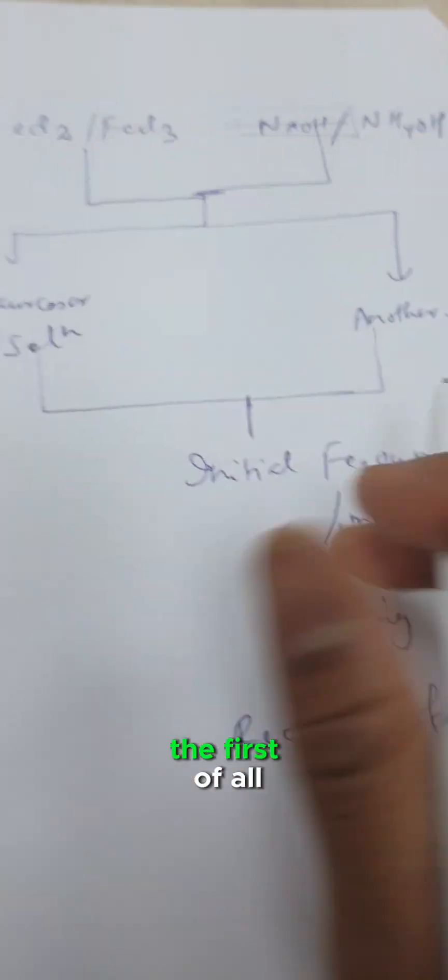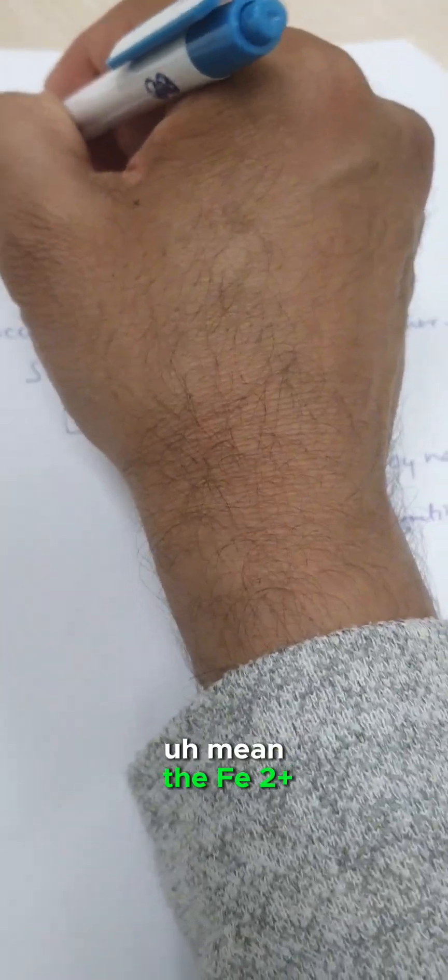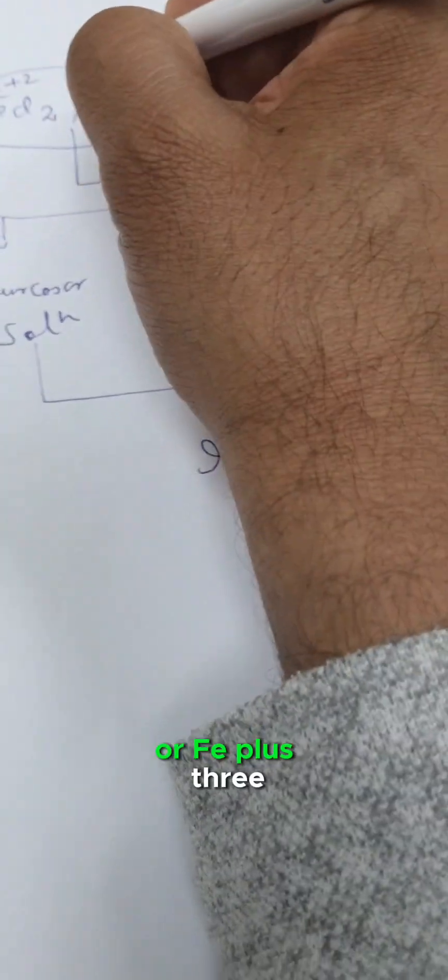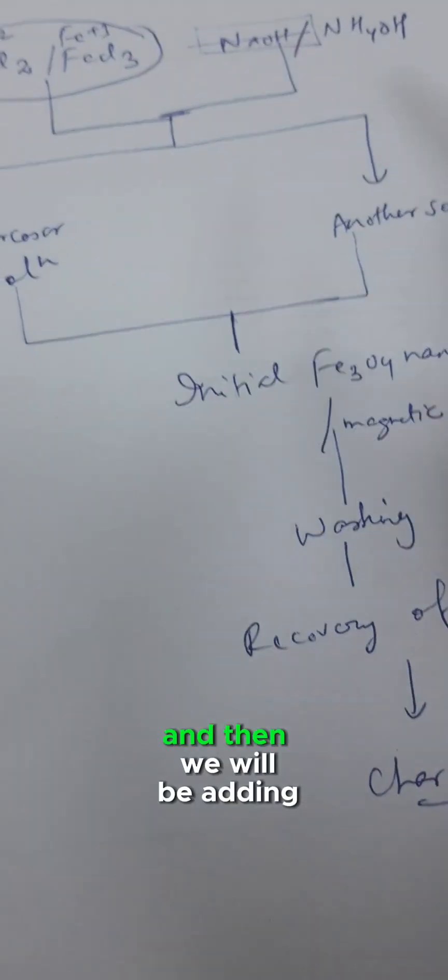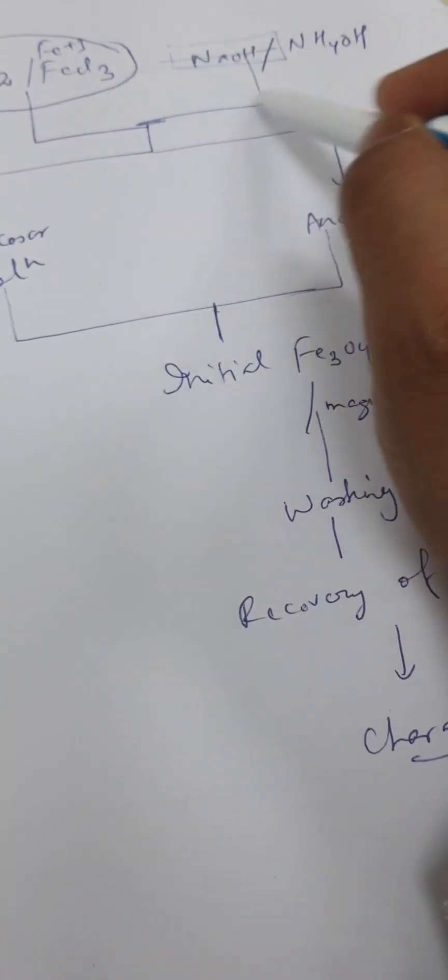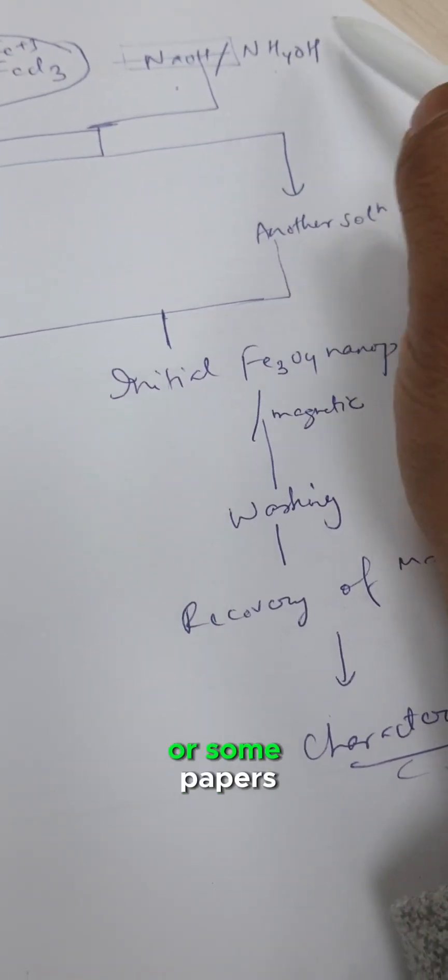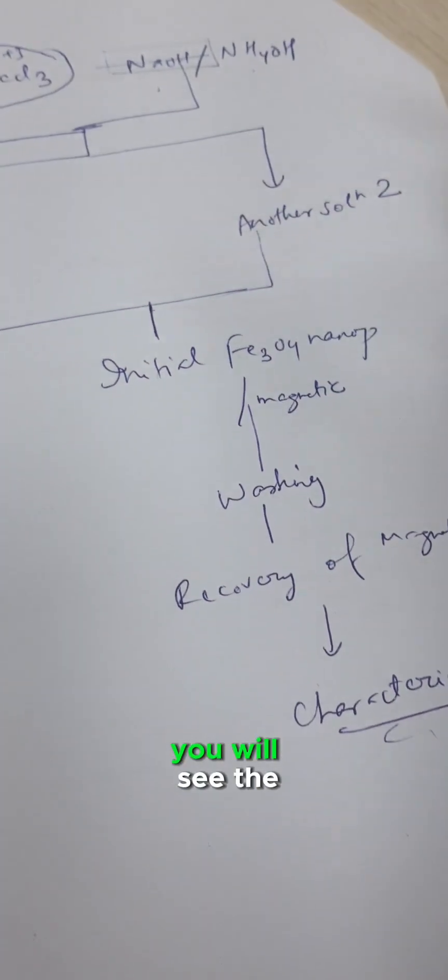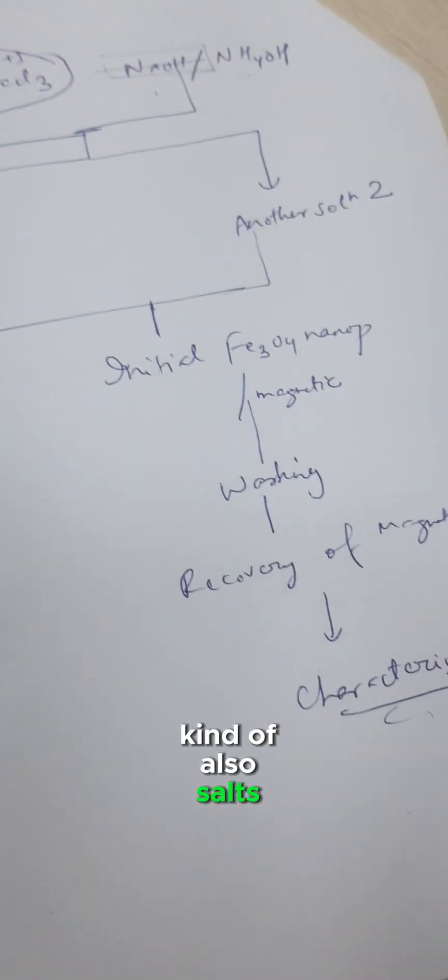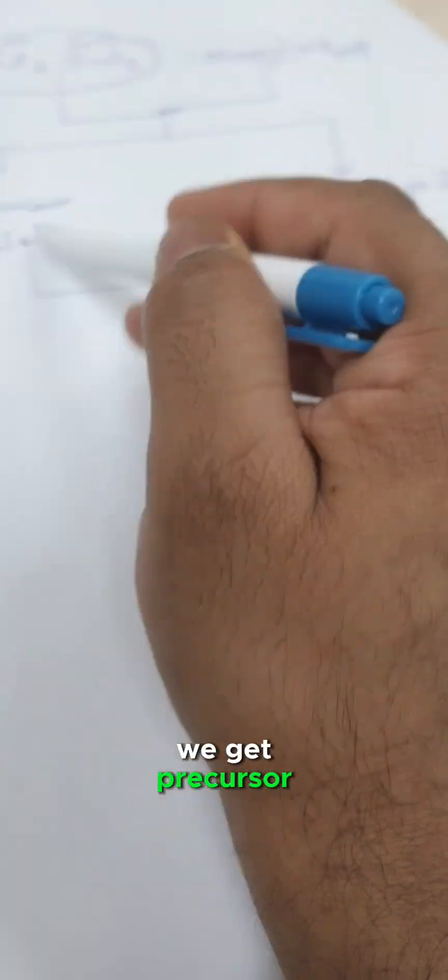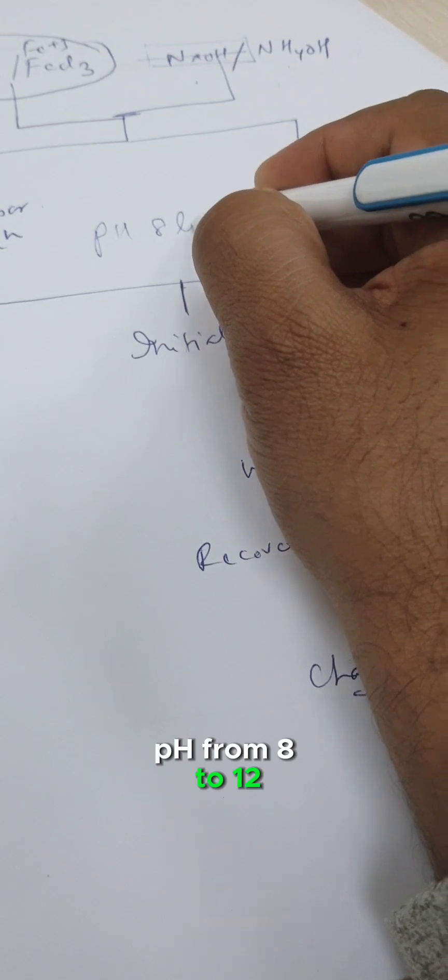The co-precipitation process is shown in the following diagram. We can see here first we'll be taking Fe2+ and Fe3+, mixing this solution, and then adding base—either NaOH, NH4OH, KOH, or some other salts. After mixing we get a precursor salt solution with pH from 8 to 12.